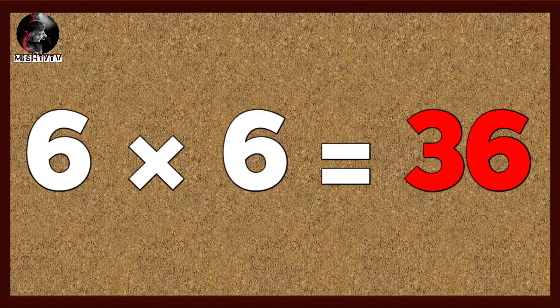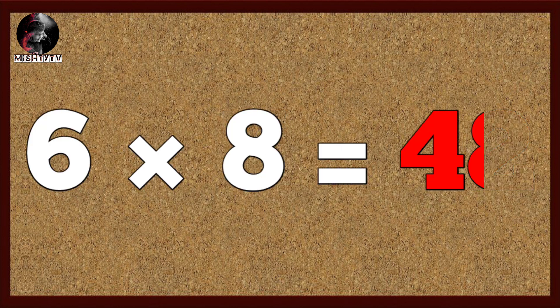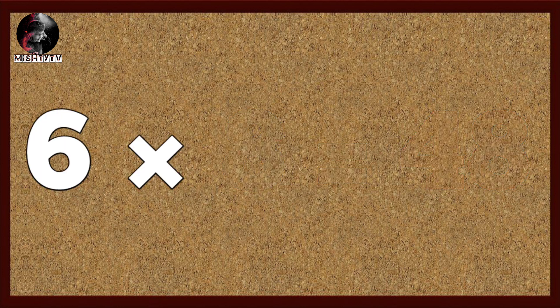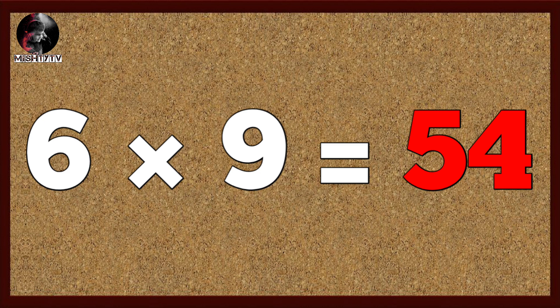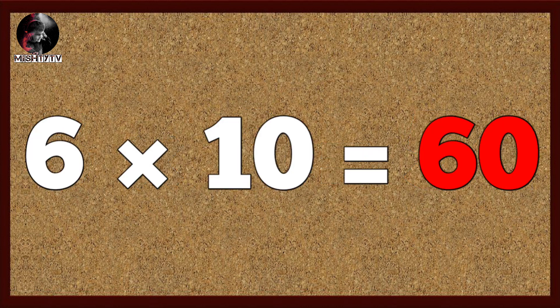Six six's are thirty-six, six seven's are forty-two, six eight's are forty-eight, six nine's are fifty-four, six ten's are sixty.